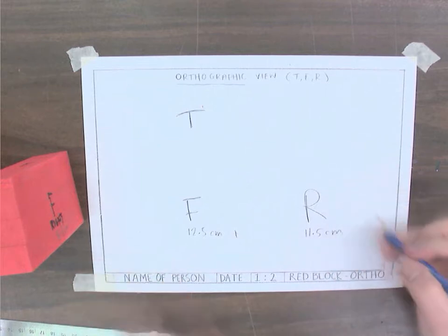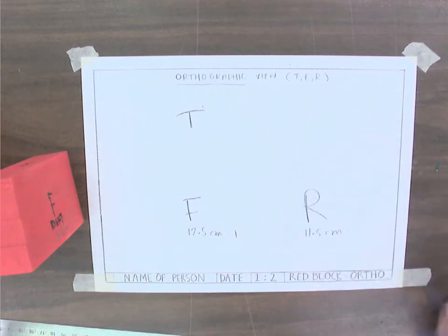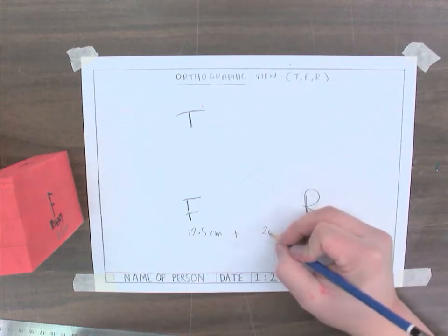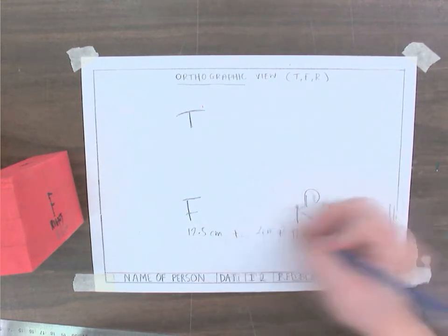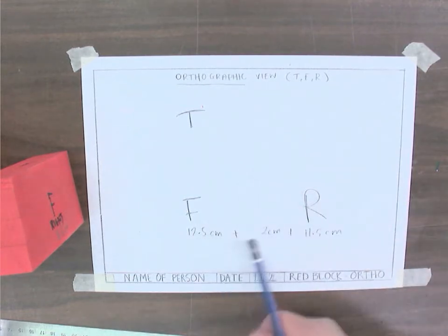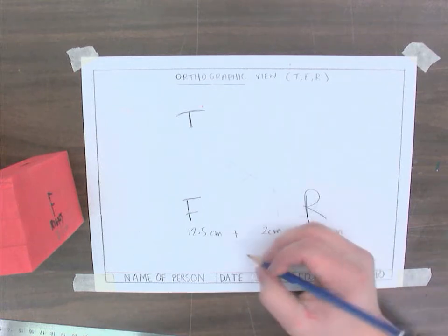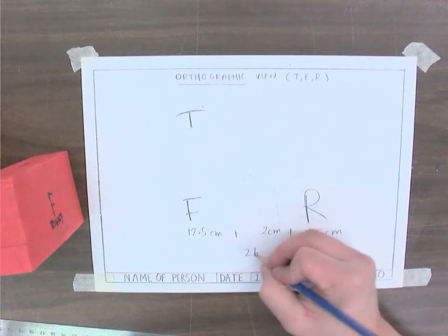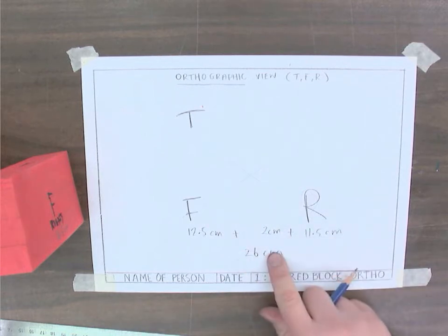I'm going to make my gap two centimeters. The gap depends on the model you're doing and how big it is — for the blocks we're doing, two centimeters is perfectly fine. Adding all three of these numbers together: twelve and a half plus eleven and a half plus two gives me 26 centimeters.